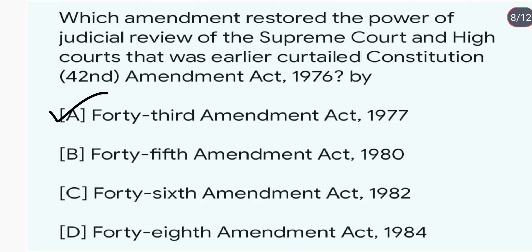The 43rd Amendment Act 1977 restored the jurisdiction of the Supreme Court and High Court in respect of judicial review and the issue of writs. The answer is A.